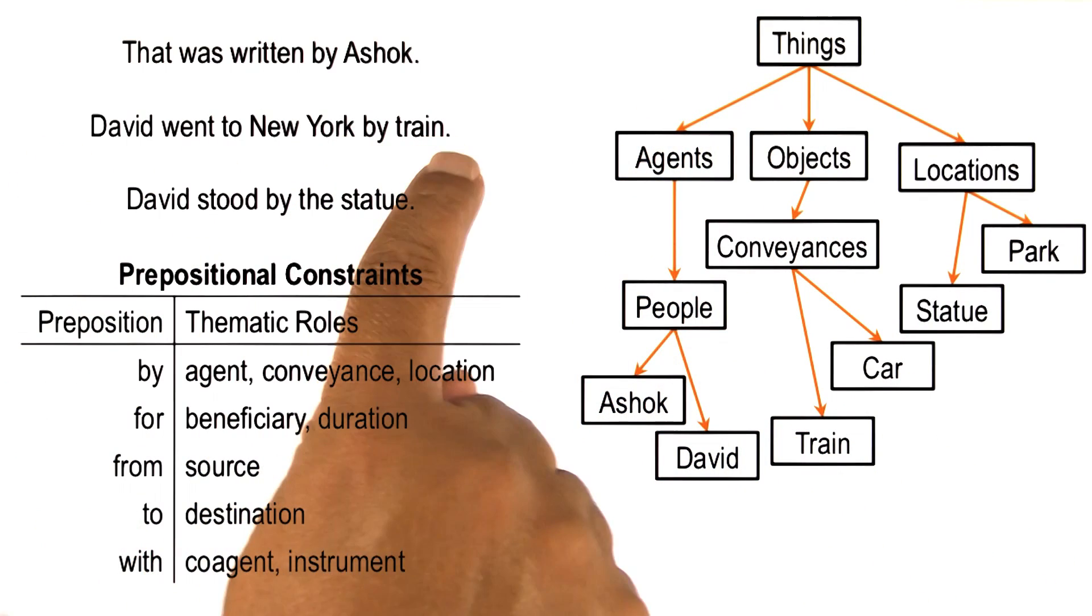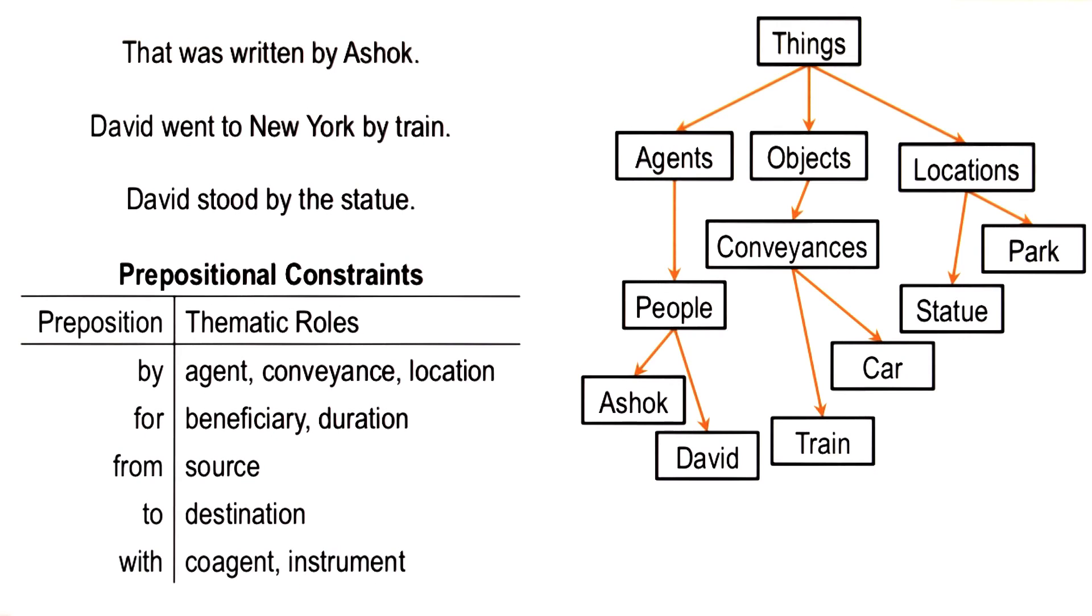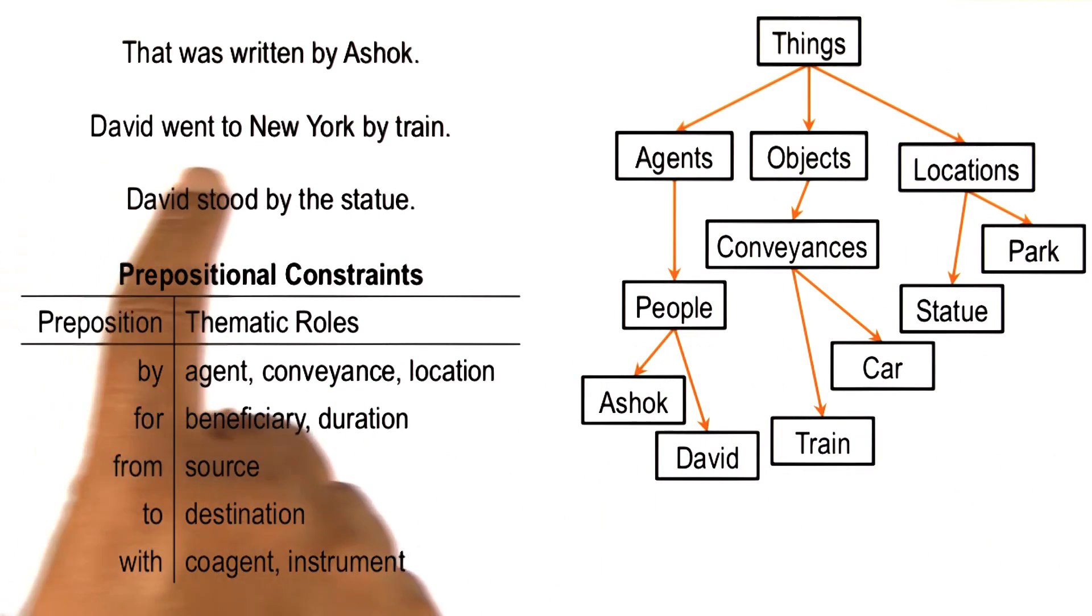So low-level bottom-up processing generates cues, which acts as probes into memory. Memory then returns knowledge like this, and the processing becomes top-down. The top-down processing tells us how to interpret the various words in the sentence, how to make sense of the story.